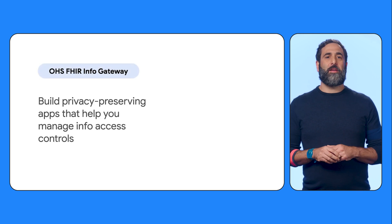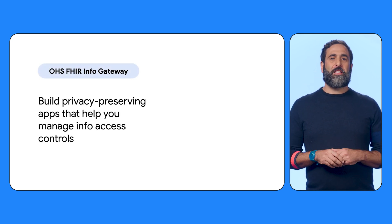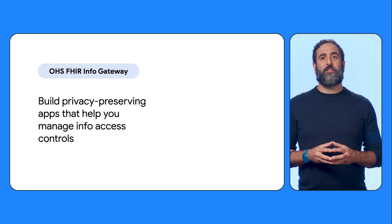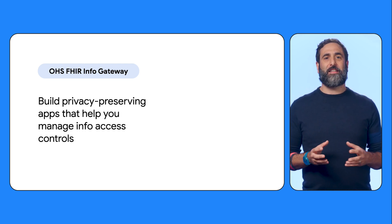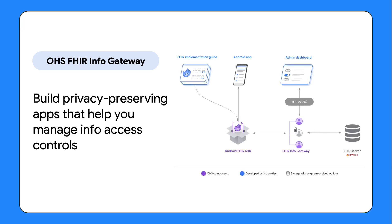Second is the FHIR Info Gateway — a standalone, reverse proxy that makes it easier for developers to enforce organizational access control policies on FHIR data. The FHIR Info Gateway is designed to work with any OpenID Connect identity provider and FHIR-compliant server. It provides a pluggable architecture to support the needs of different implementations and enables access control customization. It also comes with sample plugins, including a SMART on FHIR patient-level scope access checker to help developers get started faster.